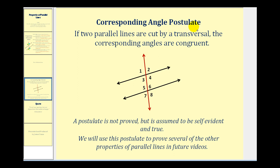Here's the corresponding angle postulate: if two parallel lines are cut by a transversal, the corresponding angles are congruent. We accept this to be true without a proof. So, that means angle one is congruent to angle five, angle two is congruent to angle six, angle three is congruent to angle seven, and angle four is congruent to angle eight. If these two parallel lines are slanted in the same direction, then if a line were to cut those two, the corresponding angles that would be formed would be congruent.